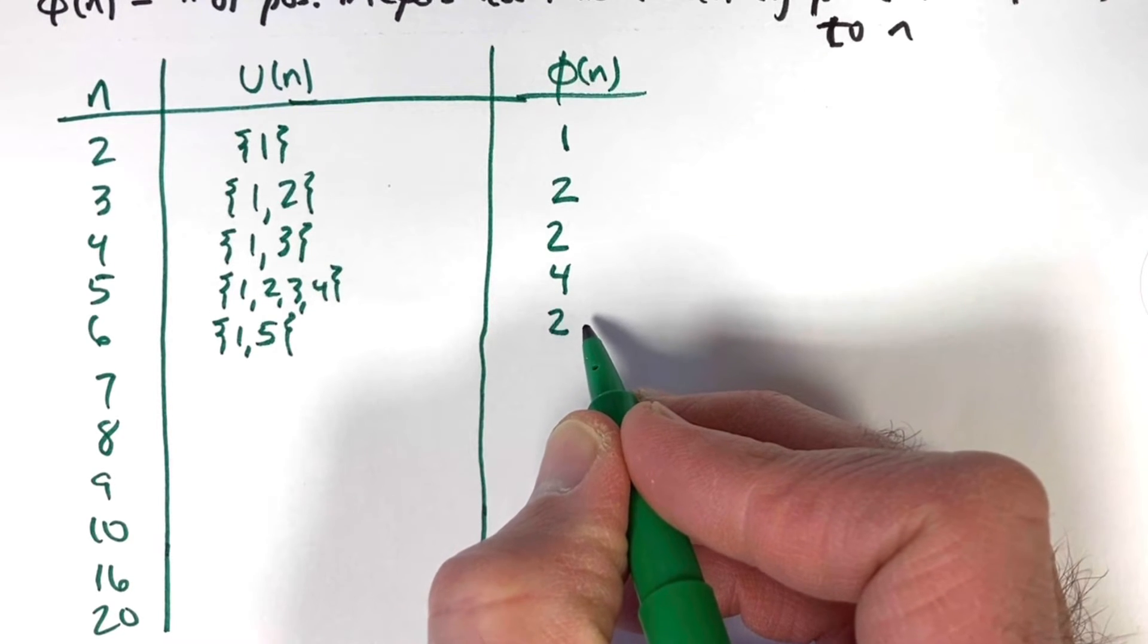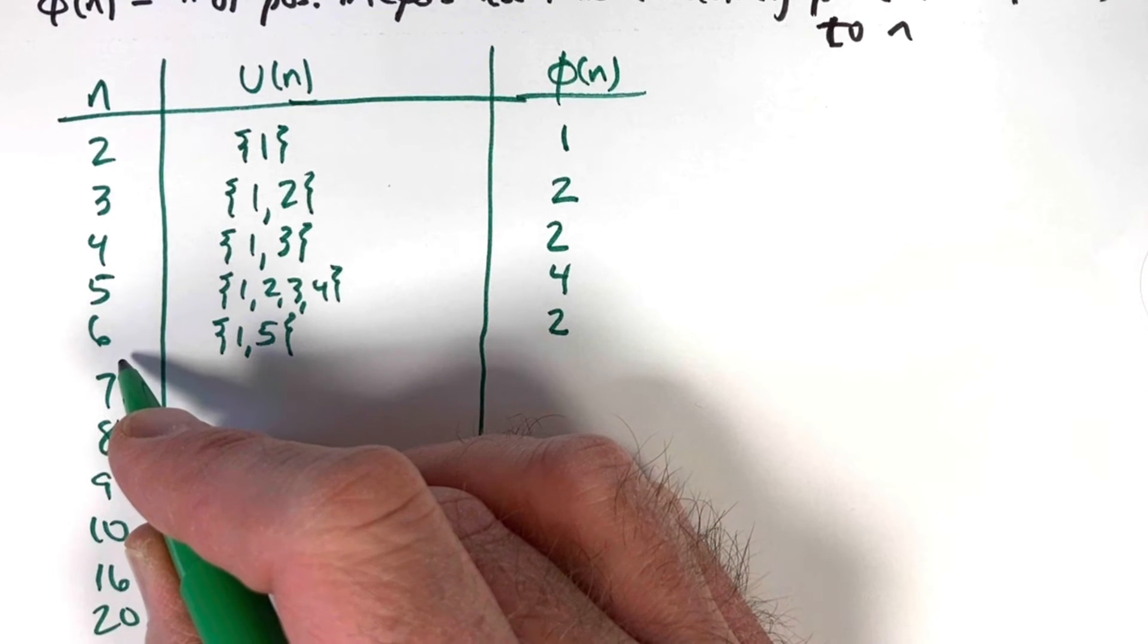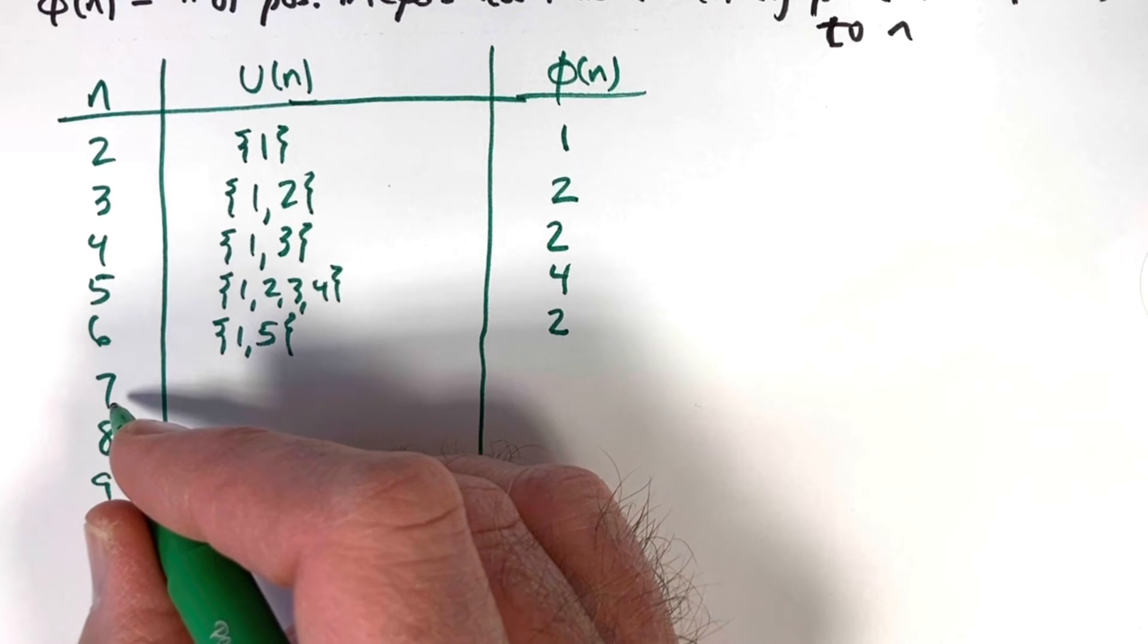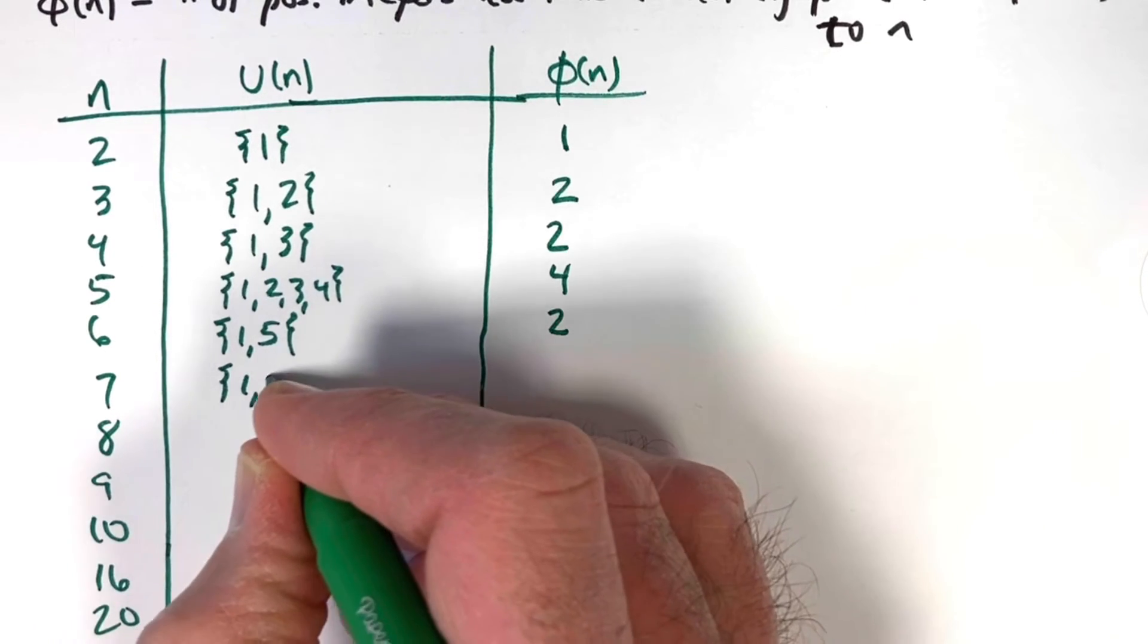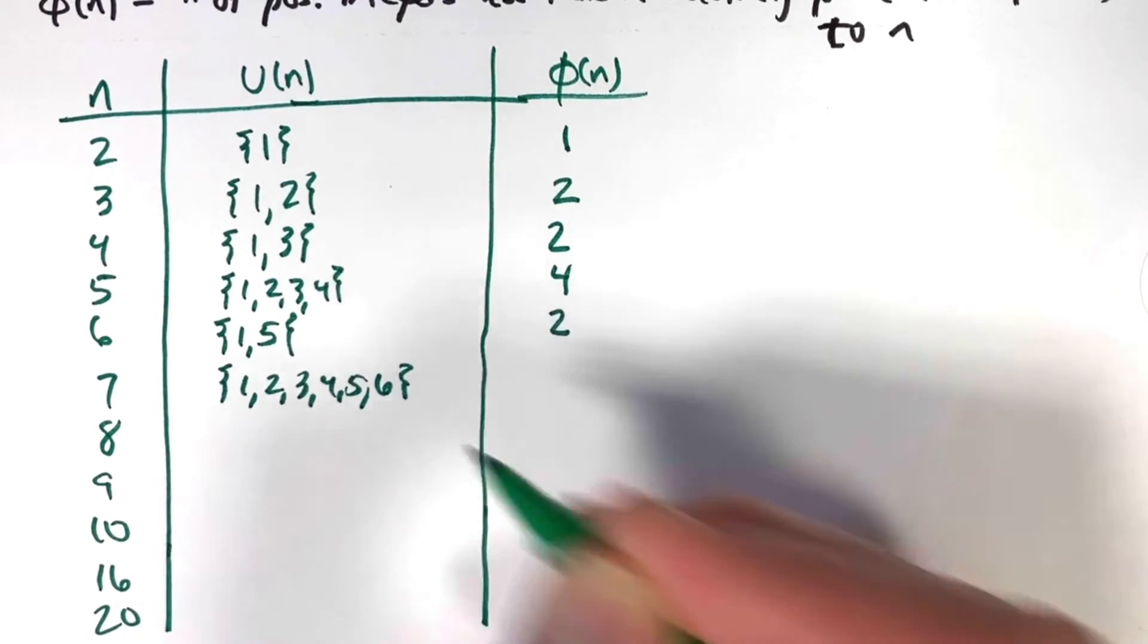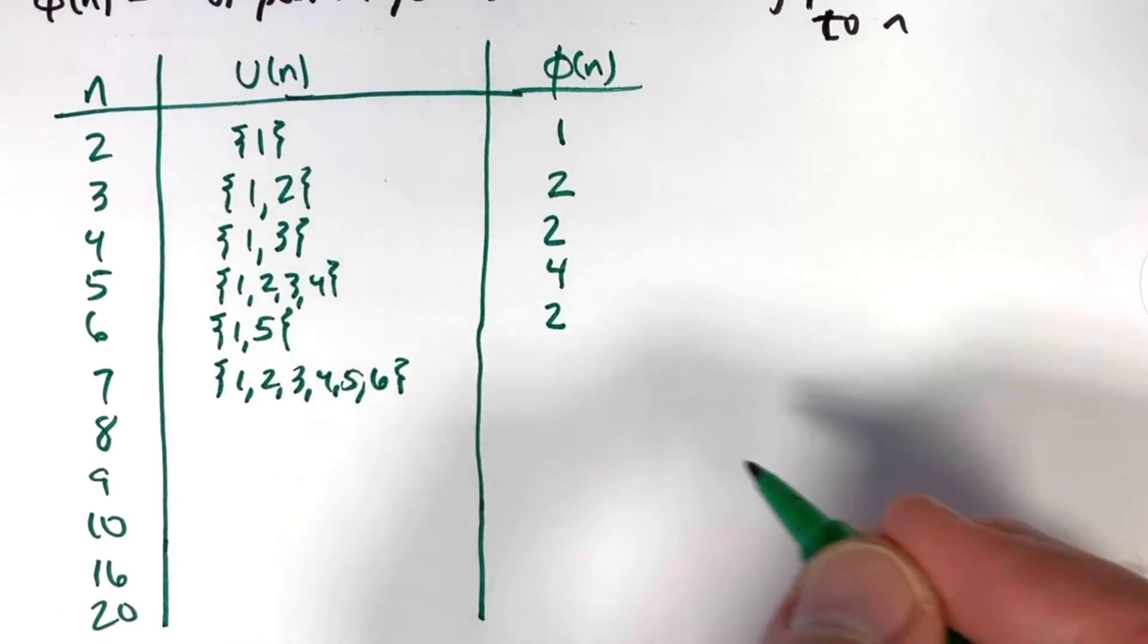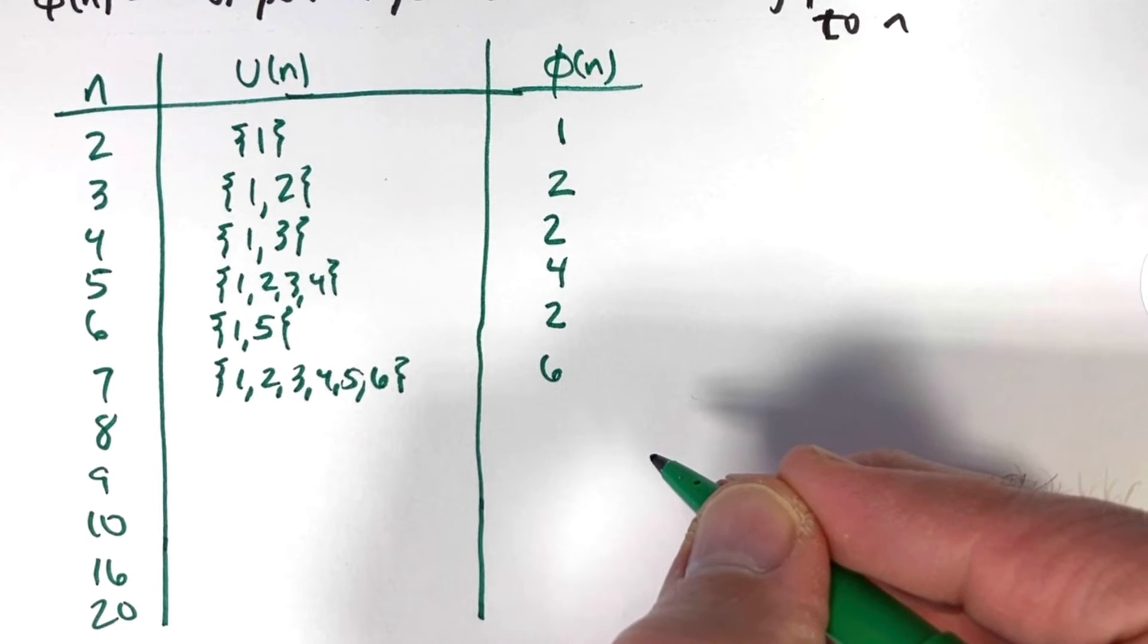The phi function goes down in value as you jump from n = 5 to n = 6. But when we jump to n = 7, which is prime, it goes back up. 1, 2, 3, 4, 5, and 6 are the positive integers less than 7 that are relatively prime to 7. There are six such numbers, so φ(7) = 6. Maybe you see a pattern when n is prime.